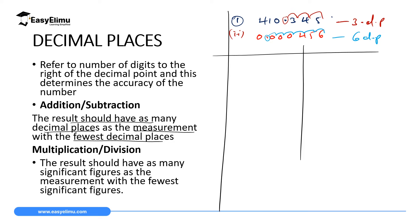For example, if you have numbers like 2.4, 2.56, and 2.789 — those are three numbers and we need to add them. The result we get should have as many decimal places as the number with the least decimal places in this list. The first number, 2.4, has only one decimal place; the second has two; the third has three. So the result must be expressed to one decimal place.